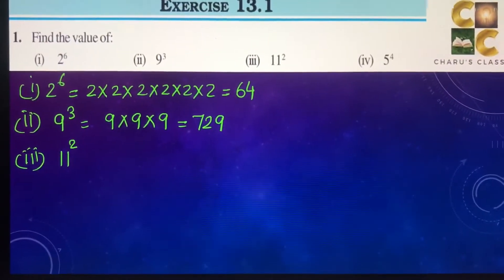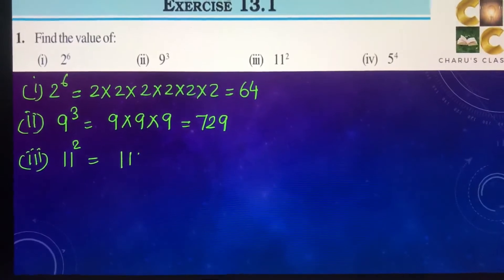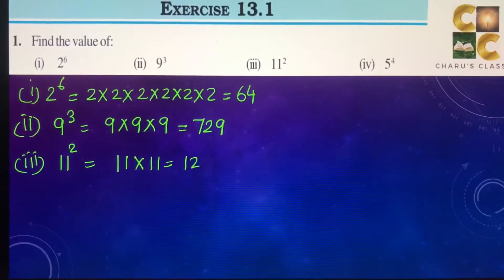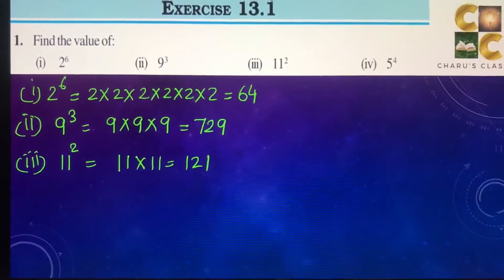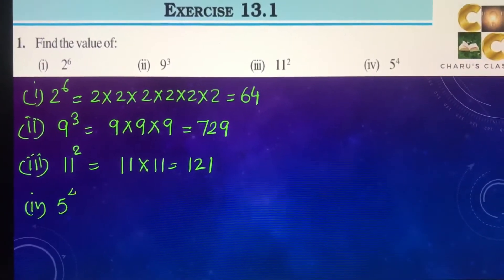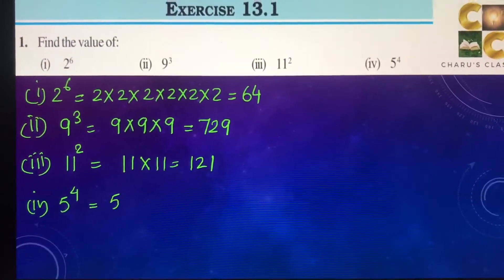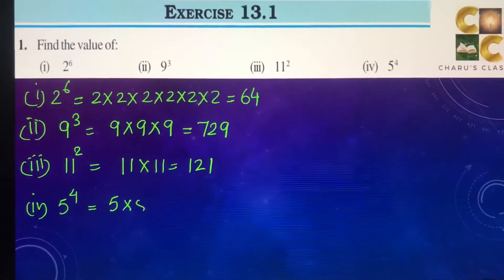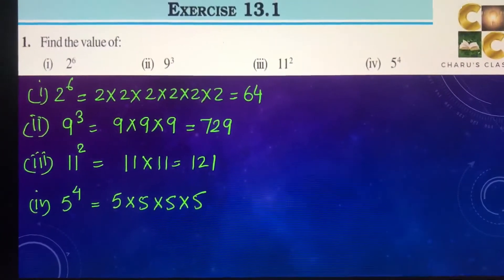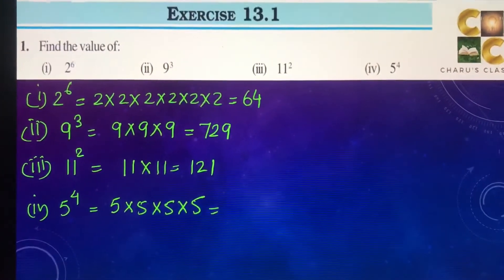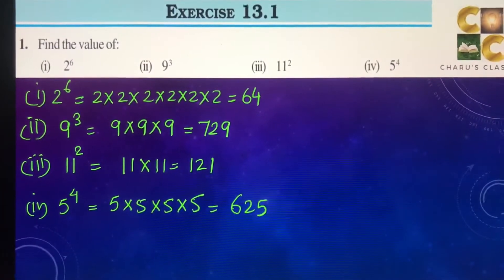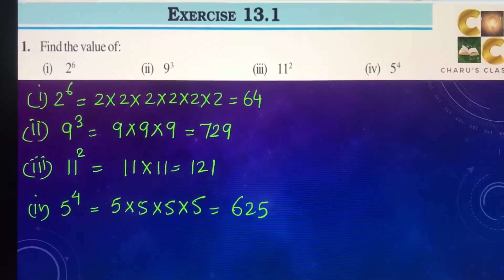Third part: 11 to the power 2. This means 11 is multiplied 2 times, giving the answer 121. Next, 5 to the power 4, that is 5 multiplied 4 times — 25 into 25 — giving us 625 as the answer.